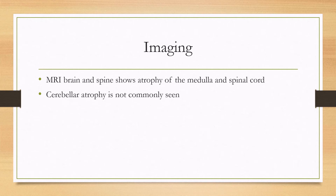On MRI of the brain and spine, you will see atrophy of the medulla and spinal cord. Cerebellar atrophy is less commonly seen, except for later in the disease.